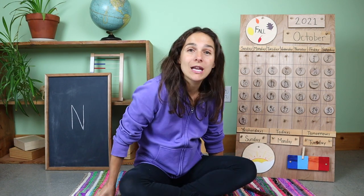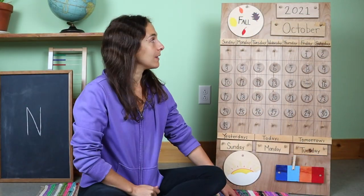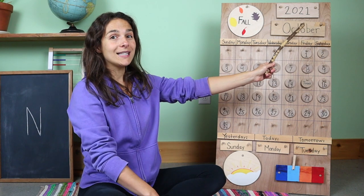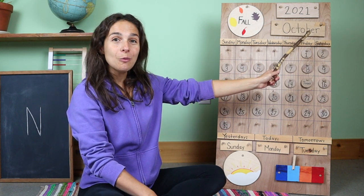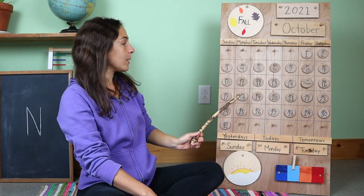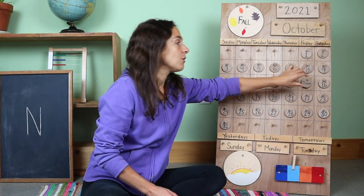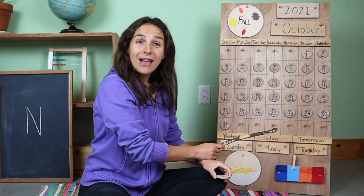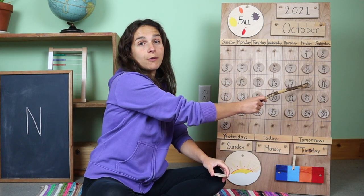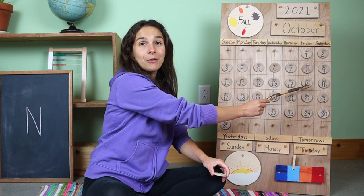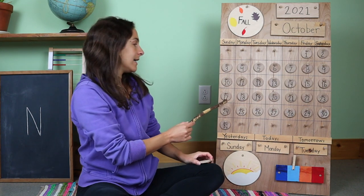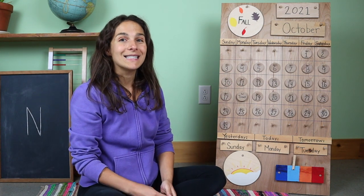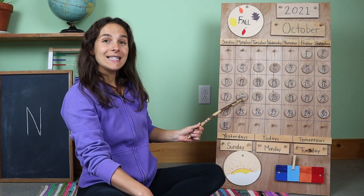Let me grab my pointing stick and we can go over the date together. Right up here at the top of the chart, we have the month. Do you remember what the month is? October. Today is October 18th. So let's move the chip over from the number 15. The last time that we met was Friday, October 15th. So we're going to move it from 15 to 16, 17, and put it right on the number 18, because today is October 18th.